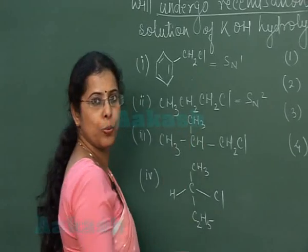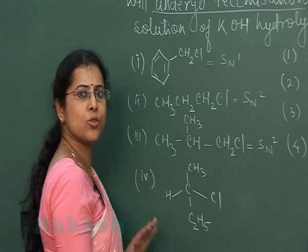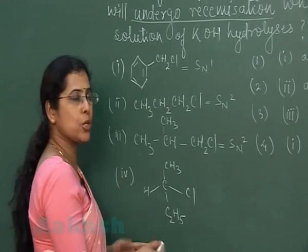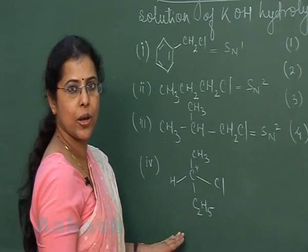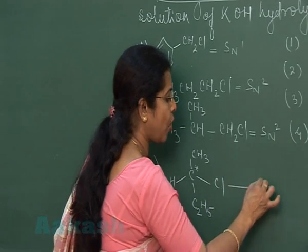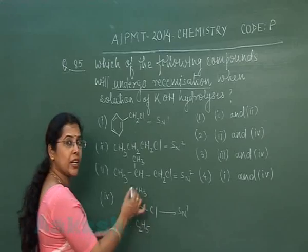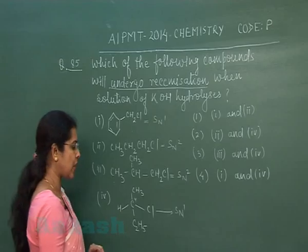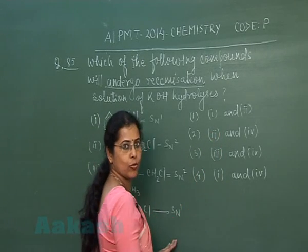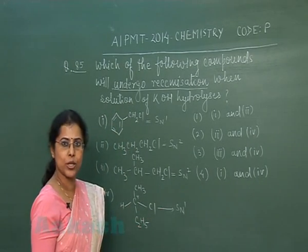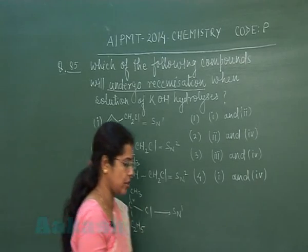The third structure is 2-methylchloropropane, and in this compound the reaction proceeds via SN2 mechanism because steric hindrance is very small, so the probability of racemization is negligible. The fourth structure has an asymmetric carbon atom, so when such compounds react via SN1 mechanism they undergo racemization. The correct compound that will produce a racemic product is only the fourth one. However, none of the given answer options list only compound 4, so this question appears to be incorrect.